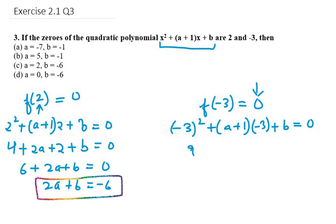So it will be 9 - 3a - 3 + b = 0. So it will be 6 - 3a + b = 0. So it can be written as -3a + b = -6. So this is my second equation.